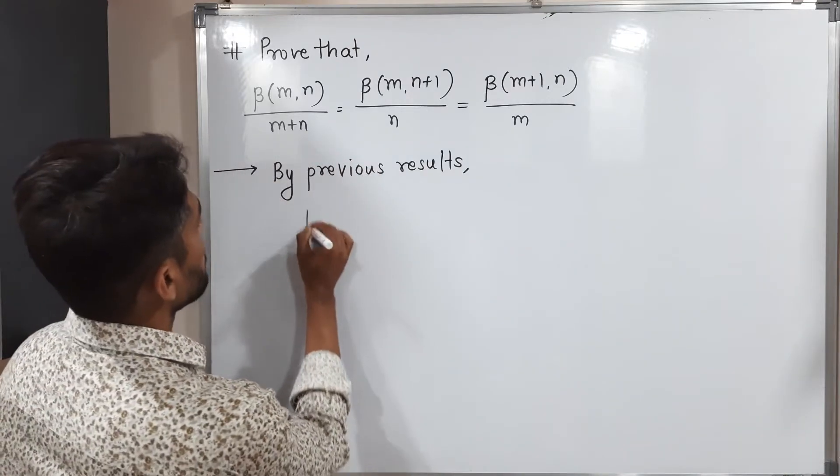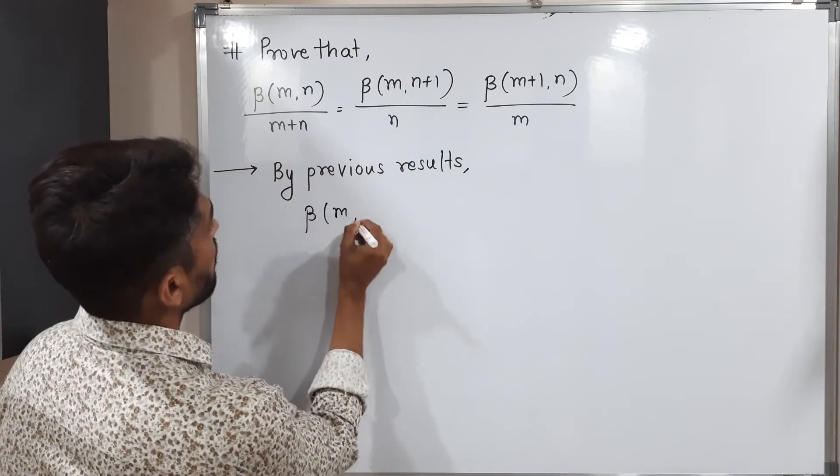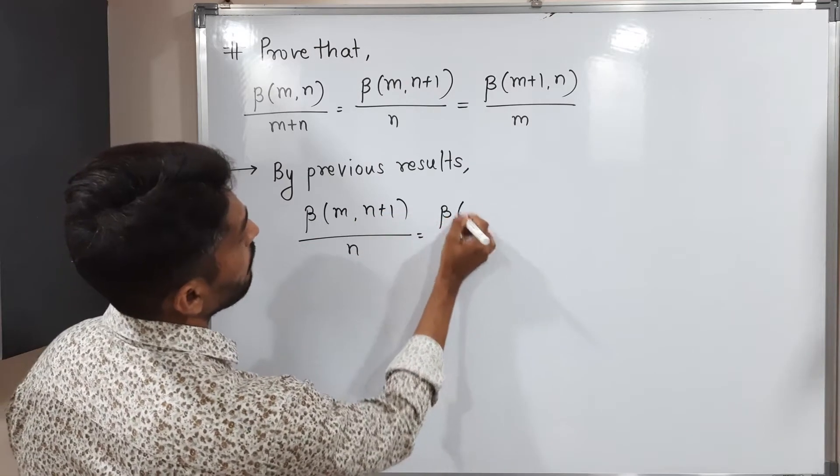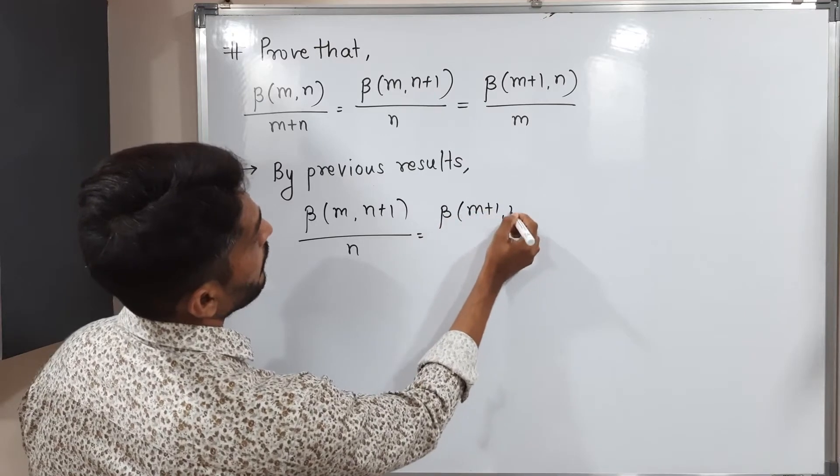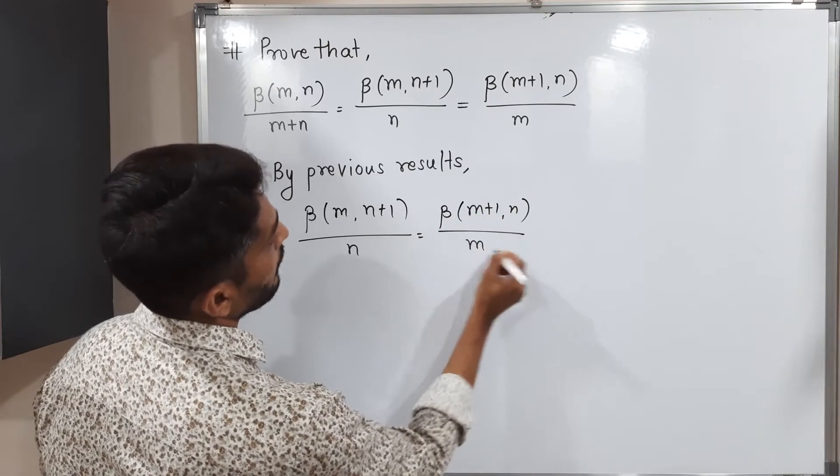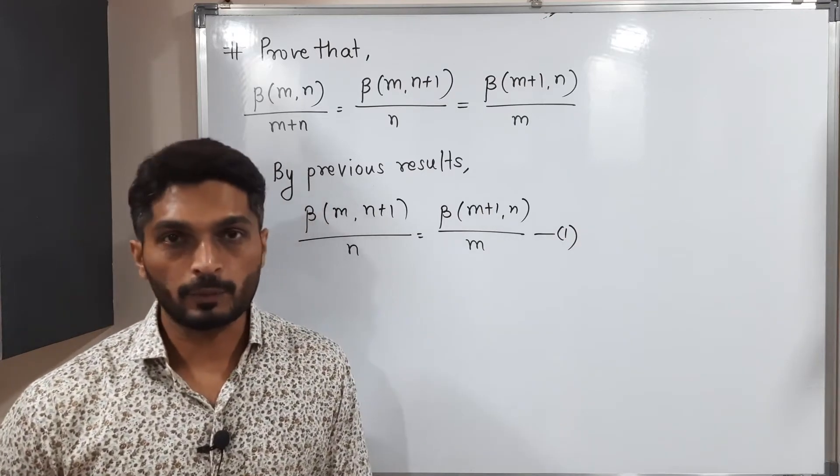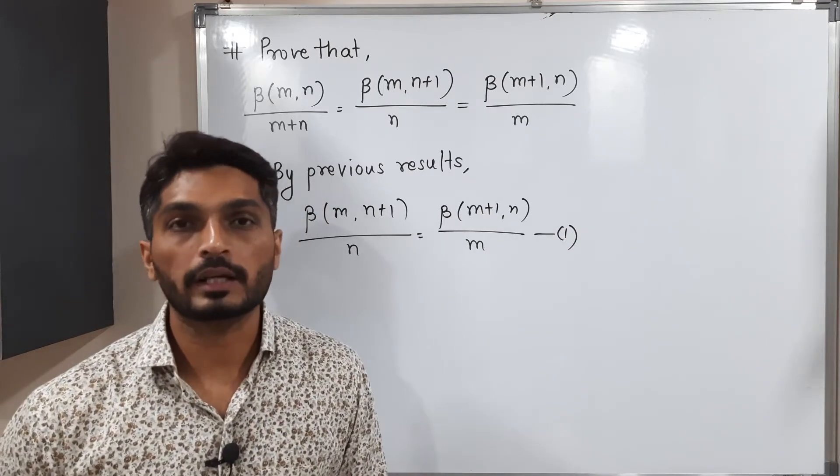The previous theorem says beta of m, n+1 divided by n is equal to beta of m+1, n divided by m. This part we have already done in our previous video, as well as one more important theorem we have studied.